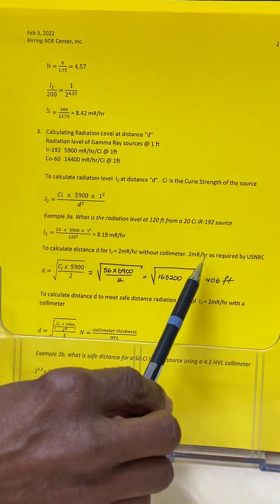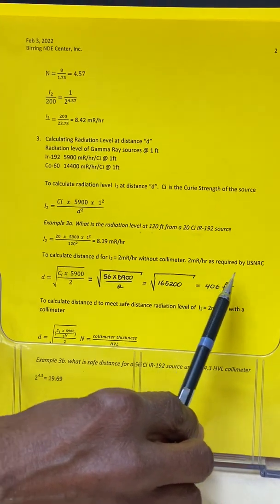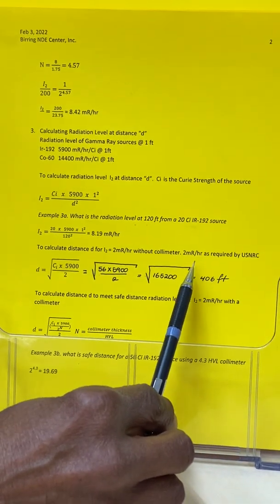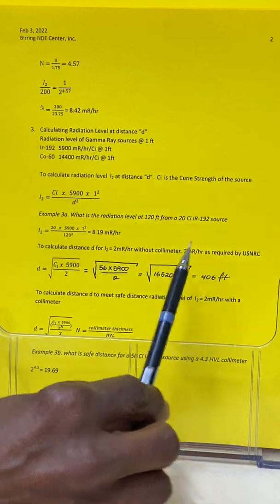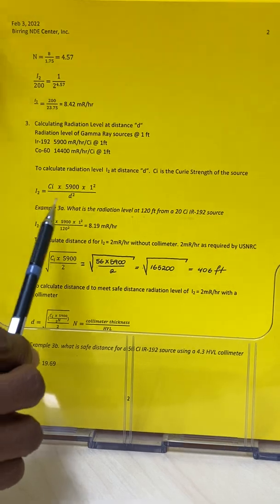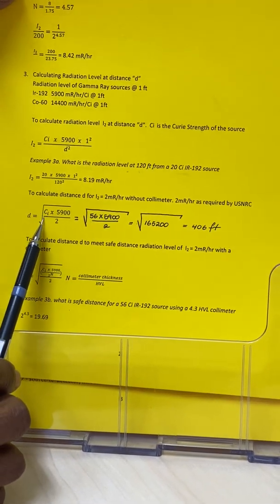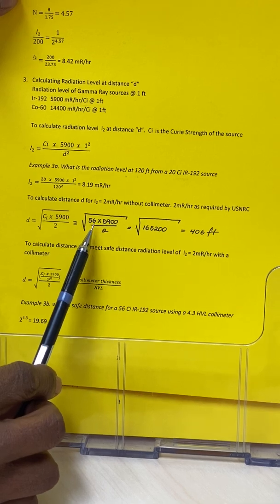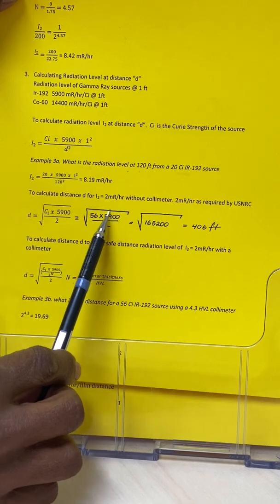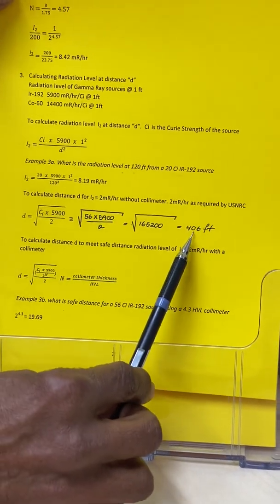Inversely, you can calculate the distance at which the radiation level will drop to 2 mR per hour. Why do we use 2 mR per hour? That is a safe working distance required as per US Nuclear Regulatory Commission for radiation people who do radiography. To get that distance, the formula is given here, which is the inverse of this formula. You put the curie strength here, which is, let's say for example, 56 times 5,900 divided by 2.